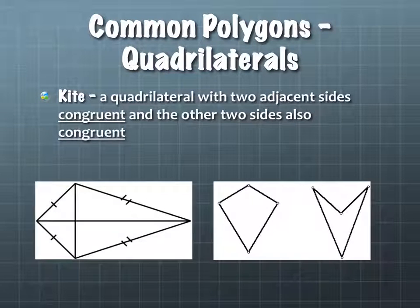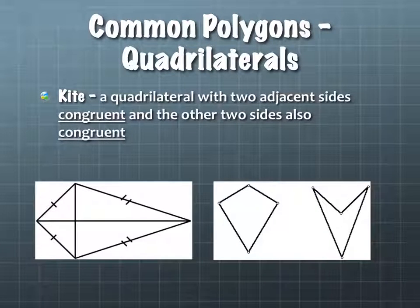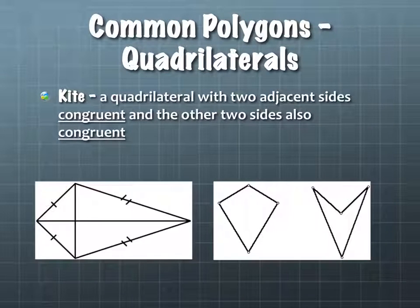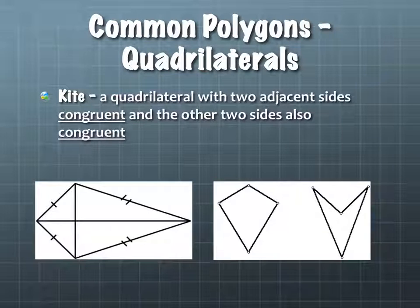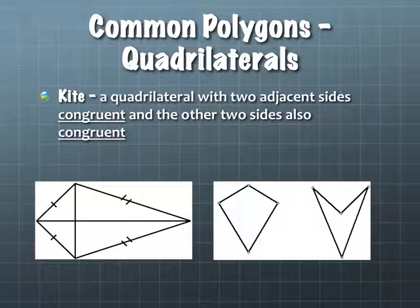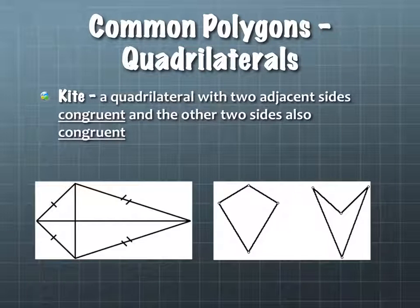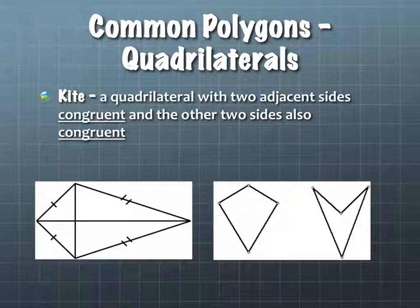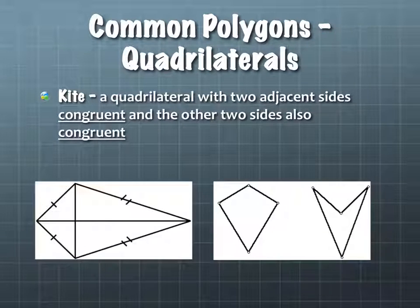There is one more shape: a kite. A kite is a quadrilateral where two adjacent sides are congruent and the other two adjacent sides are also congruent. The first picture has them actually marked. The sides on the left are congruent — adjacent just means next to one another. These other two adjacent sides are also congruent. The lines drawn in the middle are diagonals, not part of the shape itself.